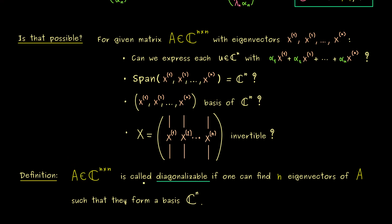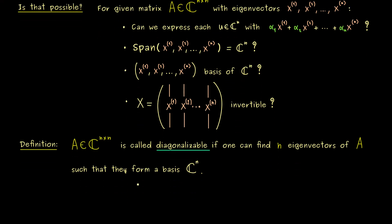There we have it, this is the definition of a diagonalizable matrix. And of course, after a definition, we should immediately check for some examples.